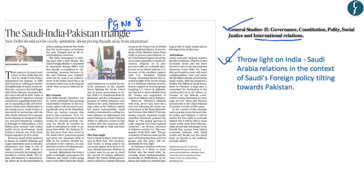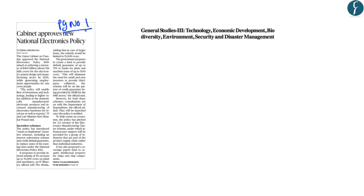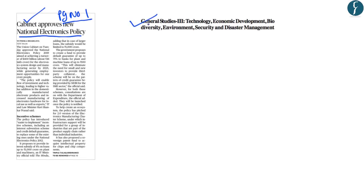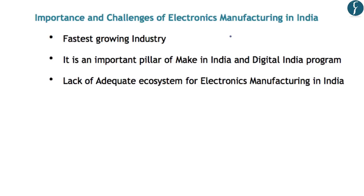Moving to the next article on page number 1, it is related to an important cabinet decision — the approval for a new National Electronics Policy. This has been approved to enable India to become a global hub for electronic system design and manufacturing. This forms part of General Studies Paper 3 under economic development. We will try to understand the importance and challenges of electronics manufacturing in India, the need for such a national policy, and the salient features of the National Policy on Electronics 2019. Electronics manufacturing is the fastest growing industry in the world.